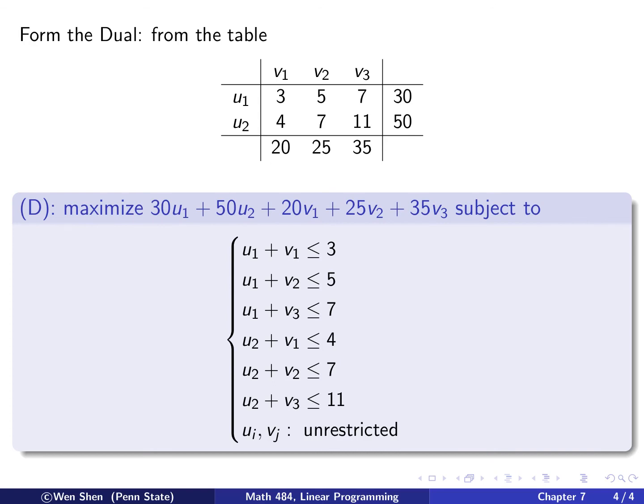Let's form the dual. The dual is to maximize 30U1 plus 50U2, and then the V vector dot this vector: 20V1 plus 25V2 plus 35V3. Add them all up. I want to maximize that subject to the constraint. The constraint is UI plus VJ less than or equal to Cij. So for each of these numbers, I get a constraint. This one is position 1,1, so it's U1 plus V1 less than or equal to 3. This one would be U1 plus V2 less than or equal to 5, and this gives me U1 plus V3 less than or equal to 7. The second row is similar. These are less than or equal sign constraints. The variables, these UI and VJs, now are actually unrestricted. They can be negative. This is the dual problem.